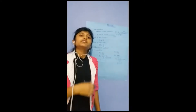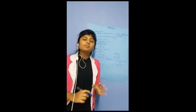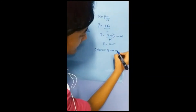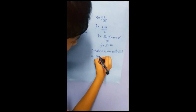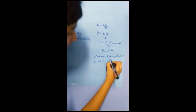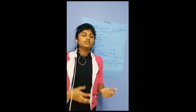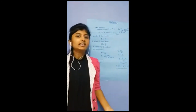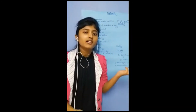Now let us see what are the factors affecting resistivity. Resistivity does not depend on the length or the area of cross section. It depends only on two factors: the nature of the material, and the second one is temperature. These are the two factors affecting resistivity. One more fact: good conductors will have low resistivity, and bad conductors or insulators will have high resistivity.